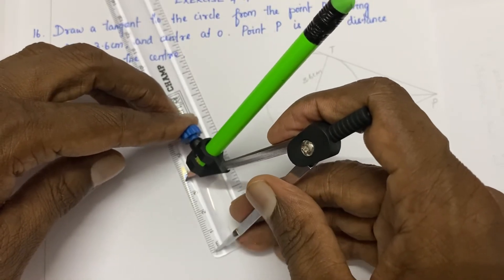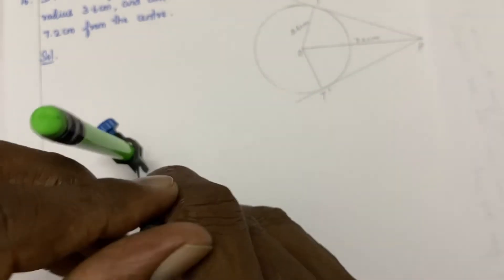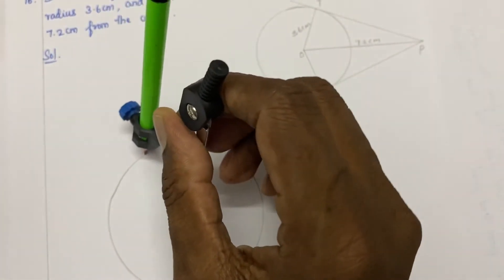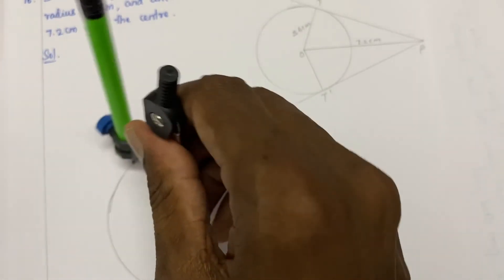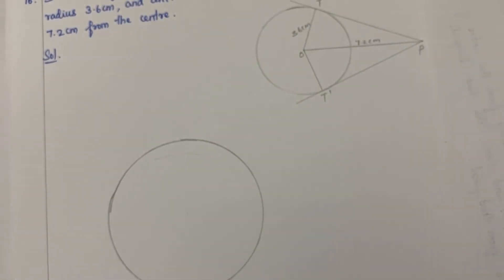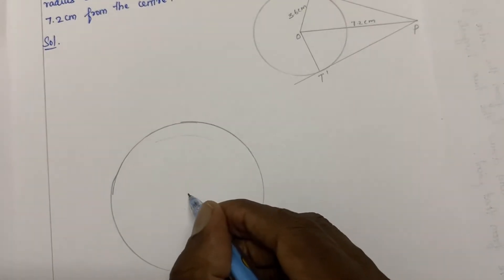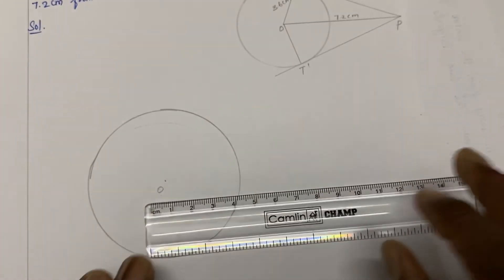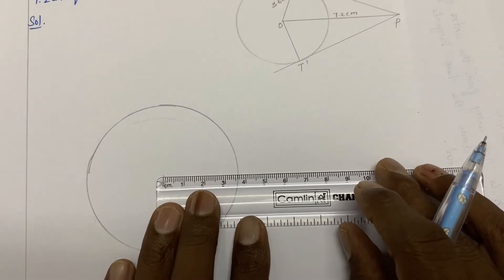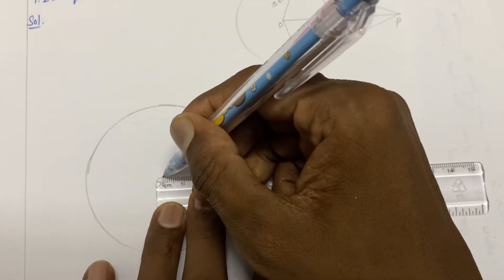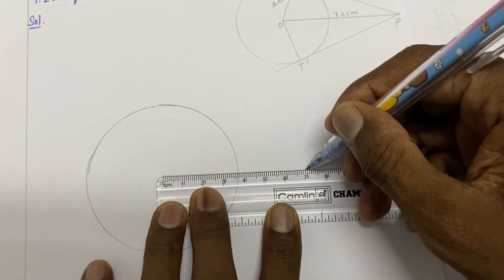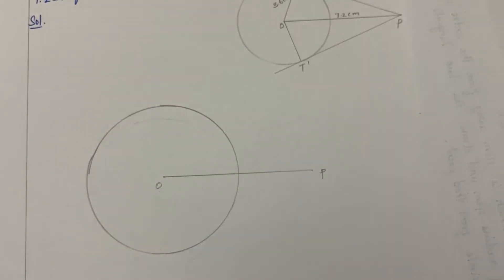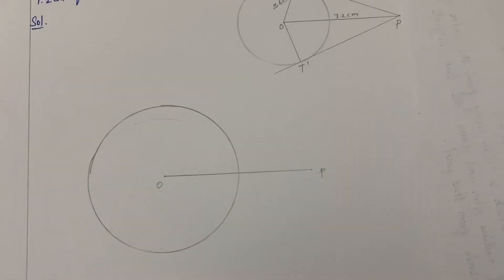Draw the circle with radius 3.6 cm and mark the center point O. Then mark point P at 7.2 cm from the center along a line. Draw the line OP measuring 7.2 cm, and find the midpoint using a bisector. Mark point P.